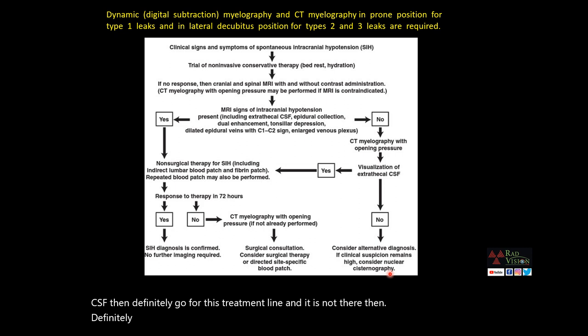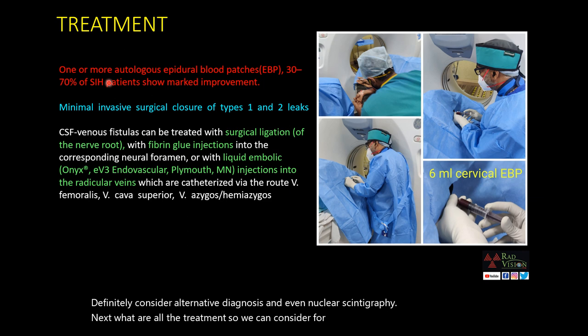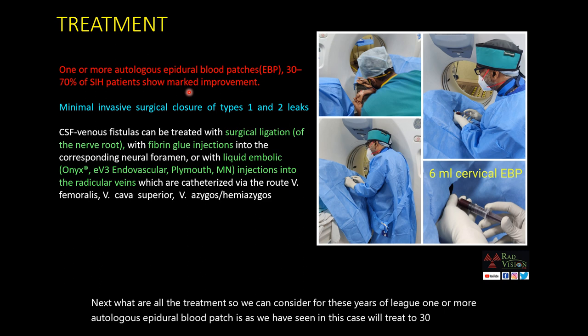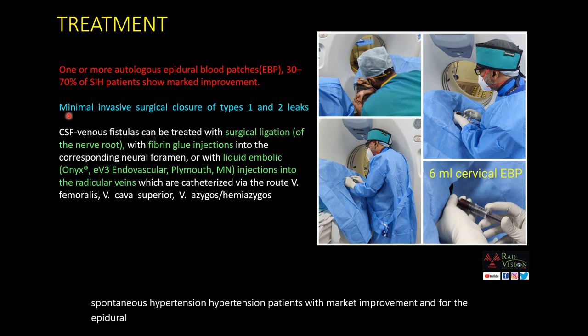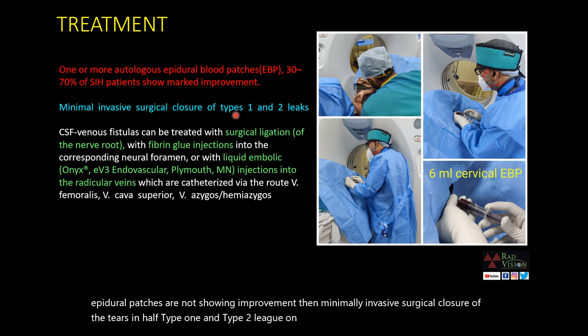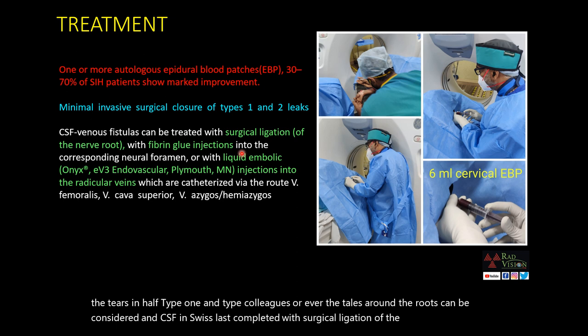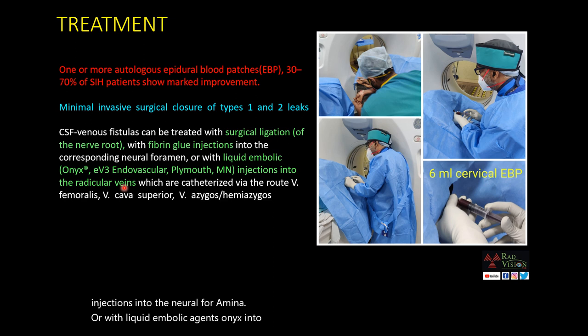Other treatment options for CSF leaks: one or more autologous epidural blood patches will treat 30–70% of spontaneous intracranial hypotension patients with marked improvement. If epidural patches show no improvement, then minimally invasive surgical closure of tears for type 1 and type 2 leaks or tears around nerve roots can be considered. CSF-venous fistulas can be treated with surgical ligation of the nerve root, fibrin glue injections into the neural foramina, or liquid embolic agents like Onyx into the radicular veins.